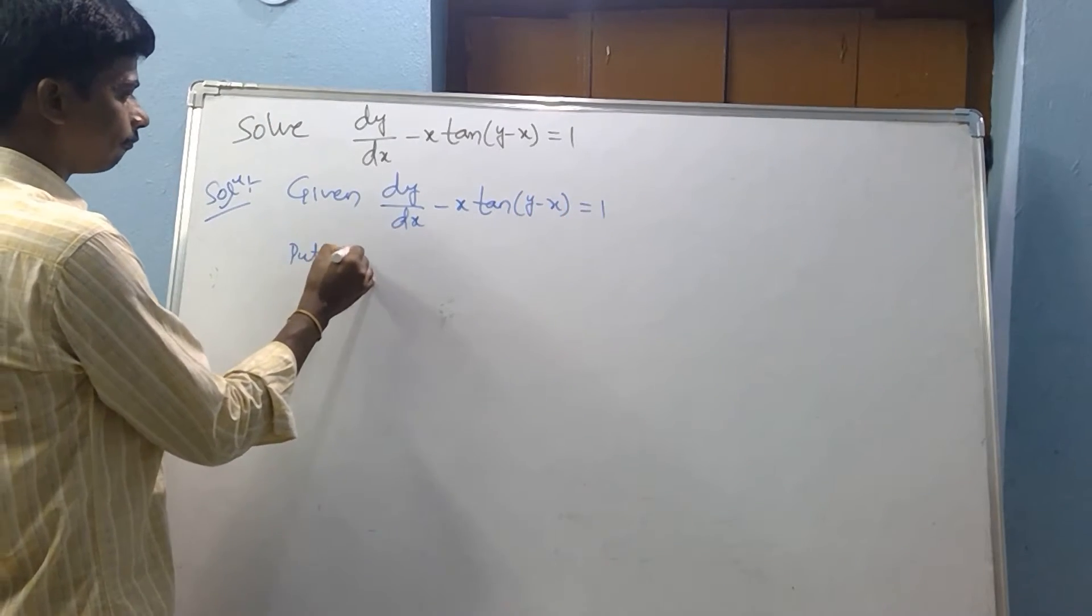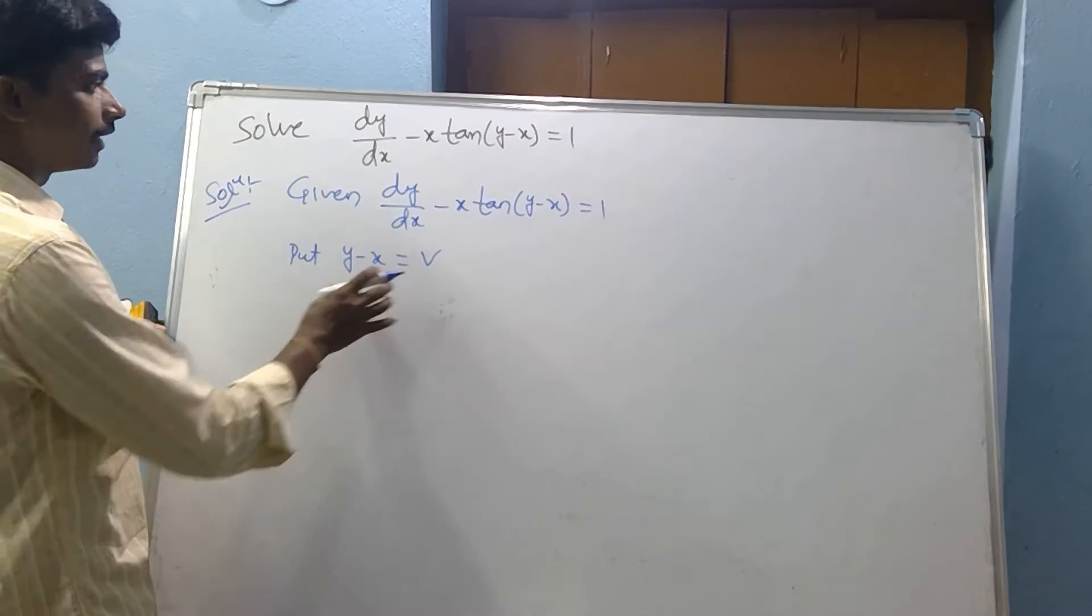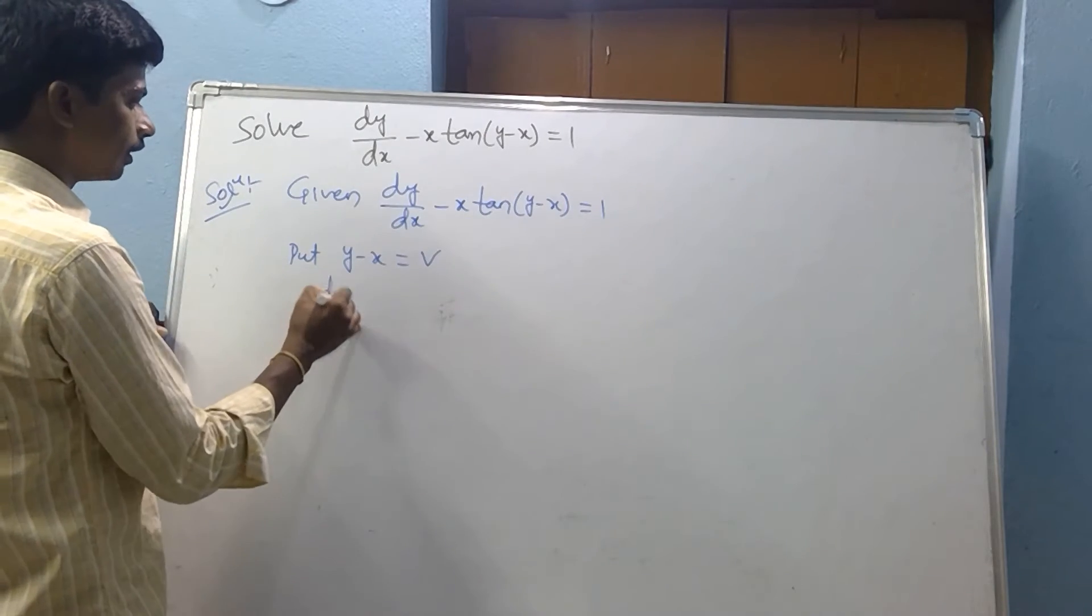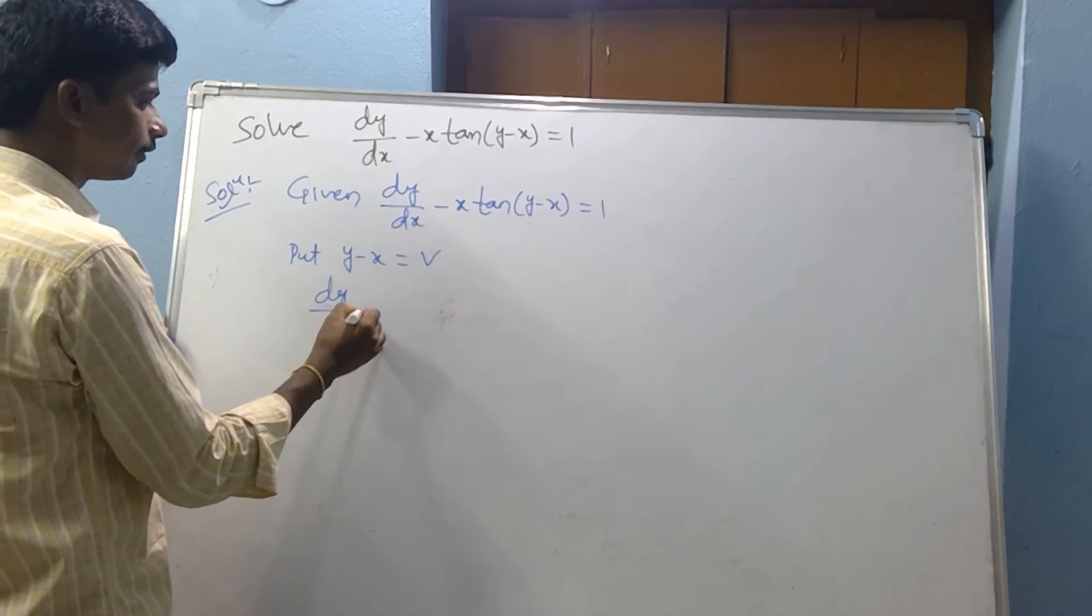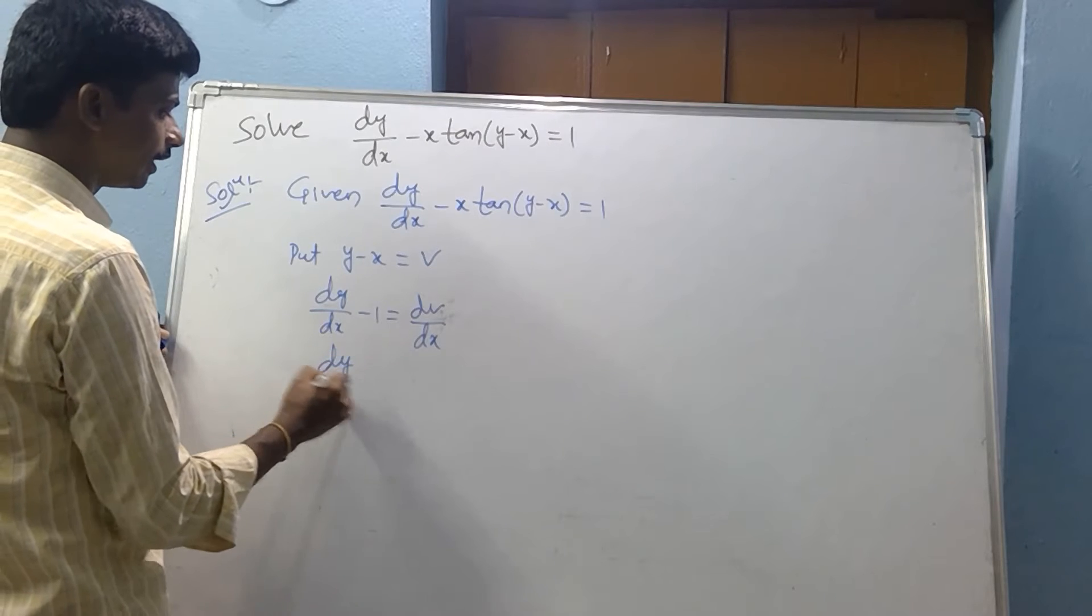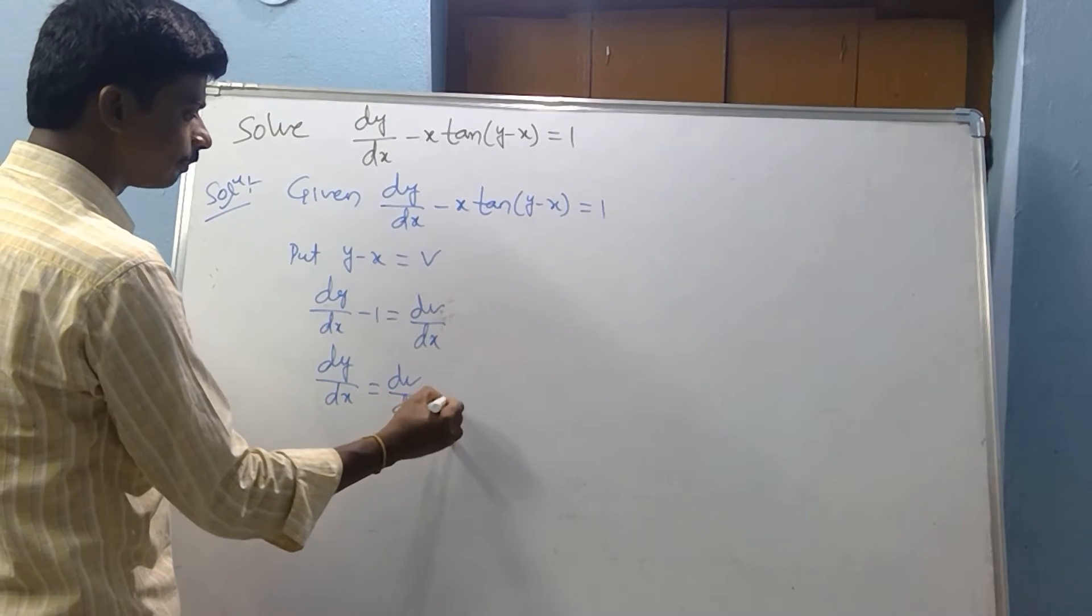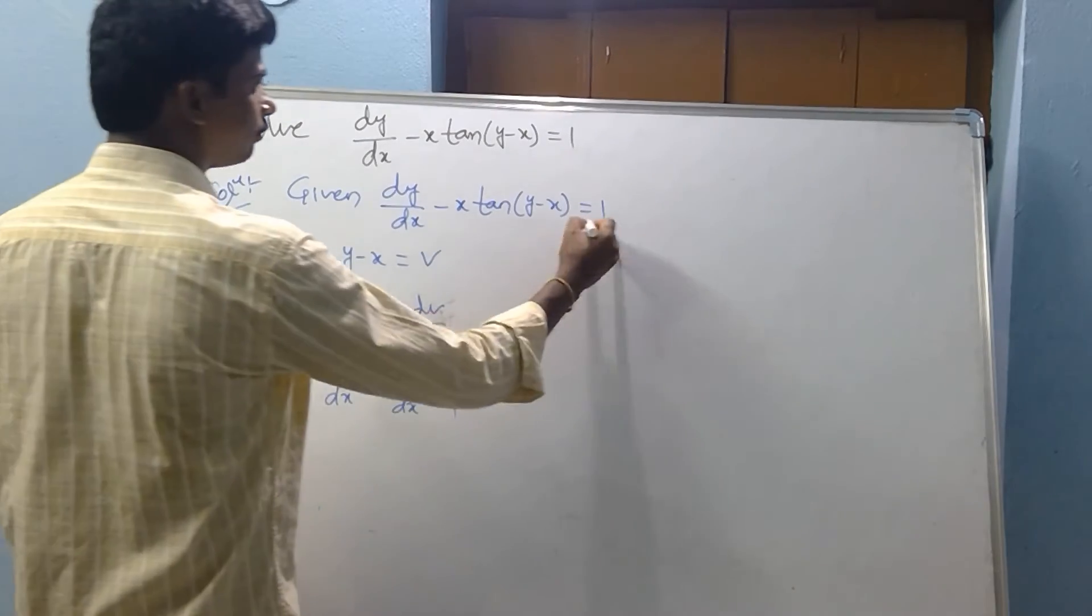Now put y minus x equal to v. So y minus x equal to v. Now dy/dx minus 1 equal to dv/dx. Therefore dy/dx equal to dv/dx plus 1. This is equation number 1.